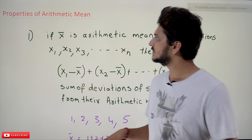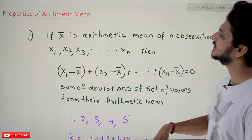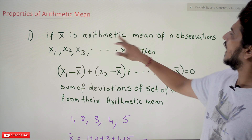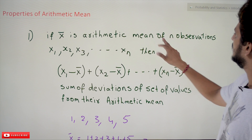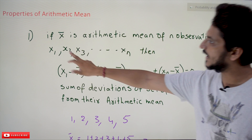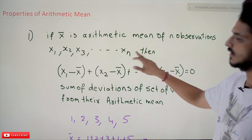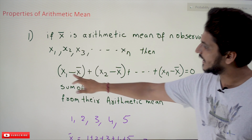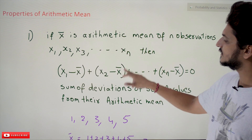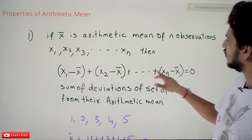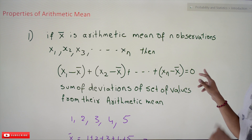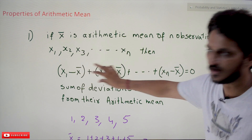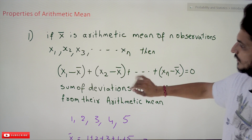Coming to today's class, let's understand the properties one by one. If x̄ is the arithmetic mean of n observations x1, x2, x3, ... xn, then (x1 − x̄) + (x2 − x̄) + ... + (xn − x̄) = 0. Let's try to understand what this equation means.